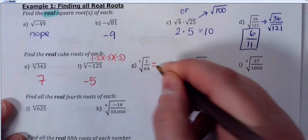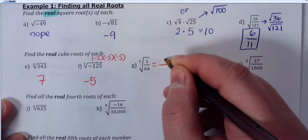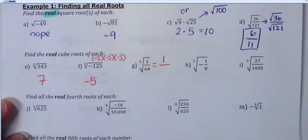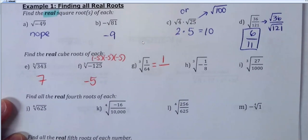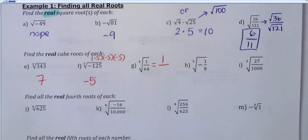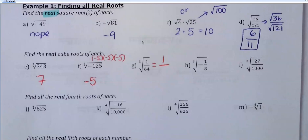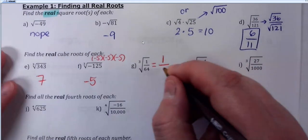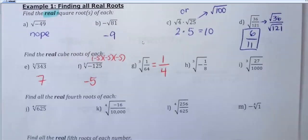Anybody know the cube root of 1? It's 1 — any root of 1 is 1. Now, 64 can be tricky because it's on multiple lists: perfect squares, perfect cubes, perfect fourths, perfect sixths. Can anybody tell me the cube root of 64? Four. So one-fourth would be my answer there.